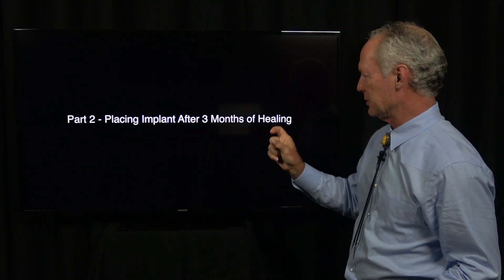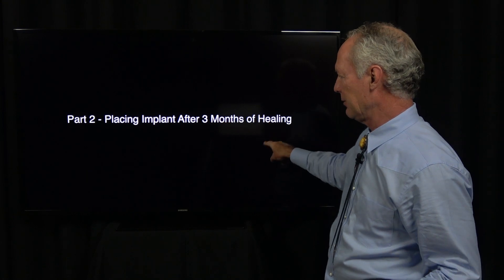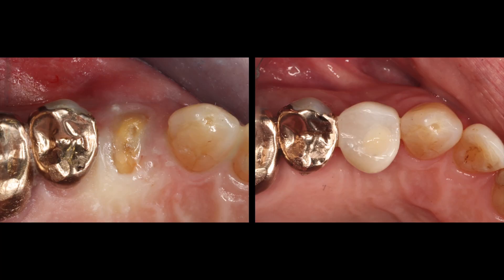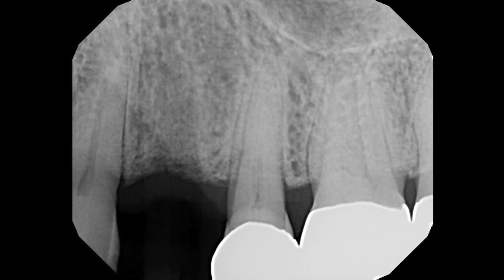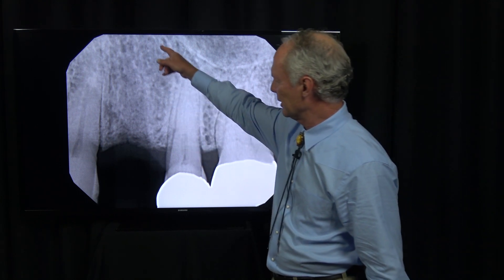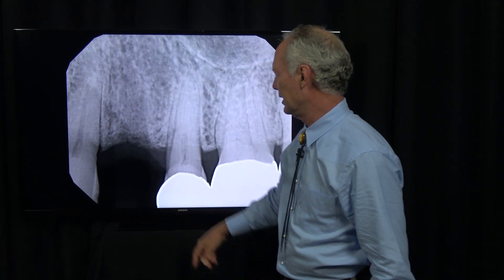In this case, since it was a smaller tooth, three months of healing is fine. This is a before and after showing a screw-retained implant abutment and crown. After three months of healing, you can see that socket's nice and dense.